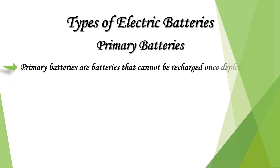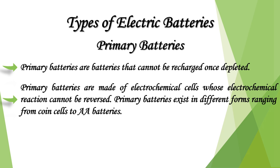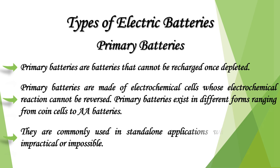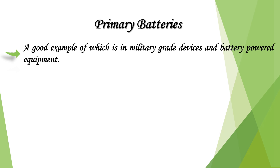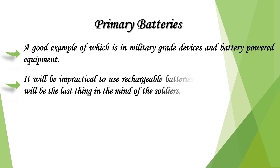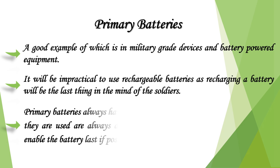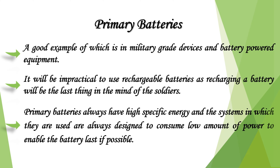Primary batteries are batteries that cannot be recharged once depleted. They are made of electrochemical cells whose reactions cannot be reversed, and exist in different forms ranging from coin cells to AA batteries. They are commonly used in standalone applications where charging is impractical, such as military-grade devices. Primary batteries always have high specific energy, and the systems using them are designed to consume low power to extend battery life.